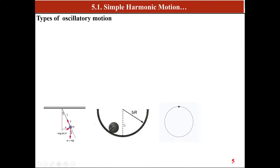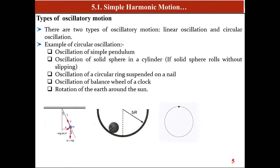Circular oscillatory motion examples include the oscillation of a simple pendulum, which moves in a curved path. Another example is the oscillation of a solid sphere inside a cylinder, where the sphere oscillates in a circular path. The oscillation of a circular ring suspended on a nail is also circular oscillatory motion. The balance wheel of a clock and the rotation of planets around the Sun are also included under circular oscillatory motion.